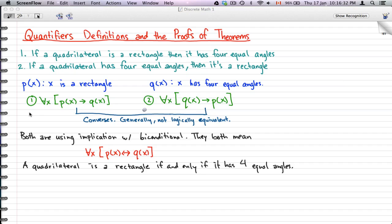Our first symbolic definition here is, for every x, if x is a rectangle, that would imply that x has four equal angles. Our second statement, for every x, if x has four equal angles, then that would imply x is a rectangle.